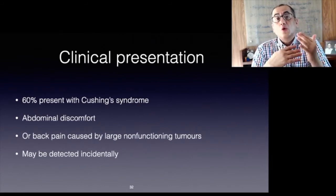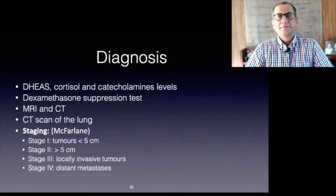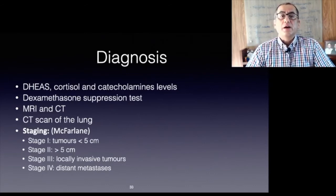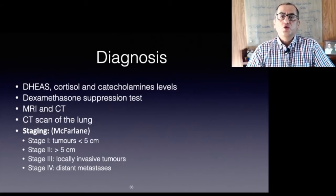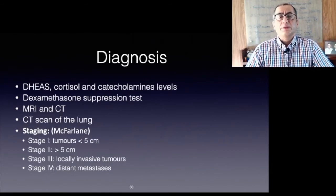Adrenocortical tumors secreting more than one hormone in excess, or feminizing/masculinizing steroids, are likely to be malignant. Diagnostic workup should include measurements of DHEAS, cortisol, catecholamines to exclude pheochromocytoma, and a dexamethasone suppression test. MRI and CT are equally effective in distinguishing adenoma from carcinoma. MRI angiography is useful to exclude tumor thrombus in the vena cava. Since distant metastases are frequently present, a CT scan of the lung is recommended.